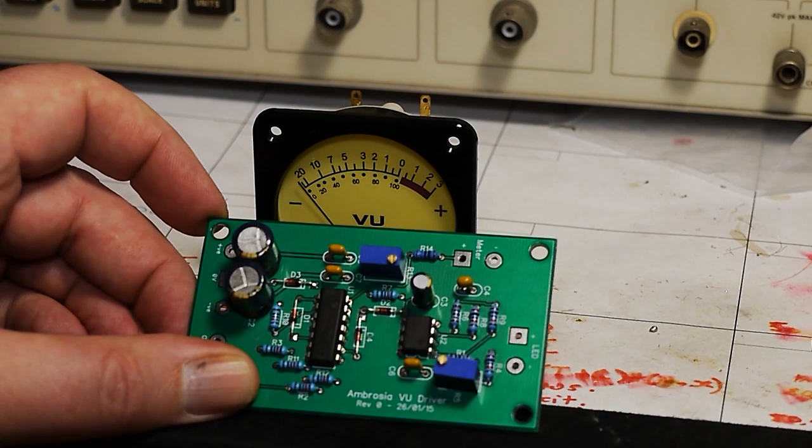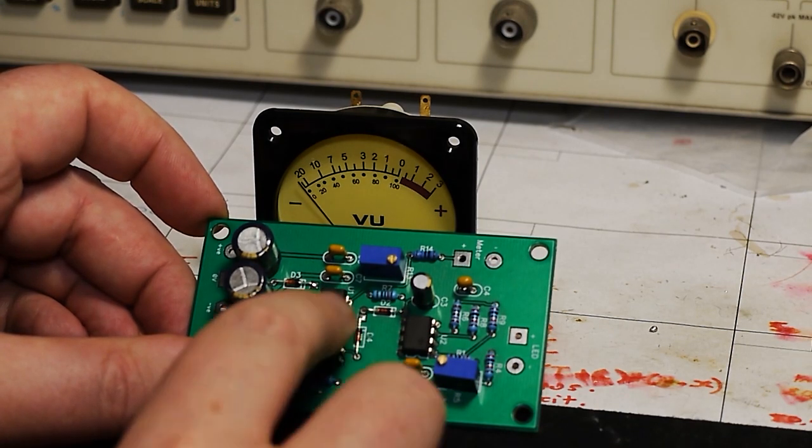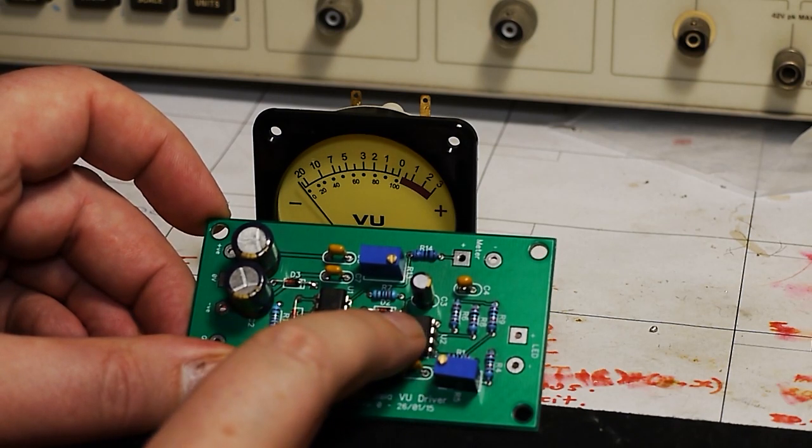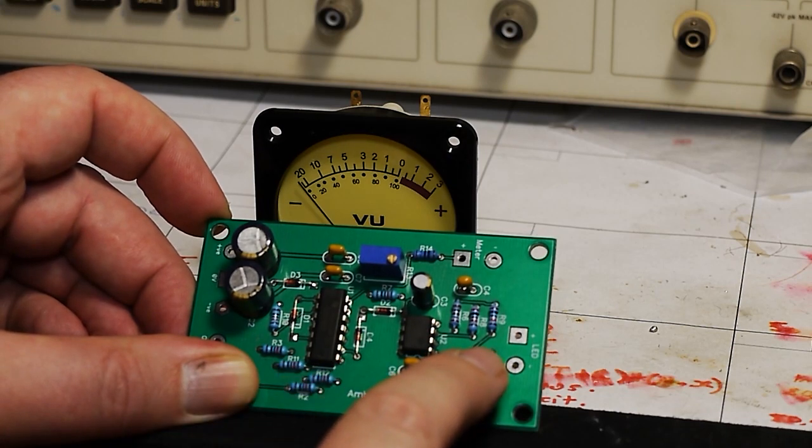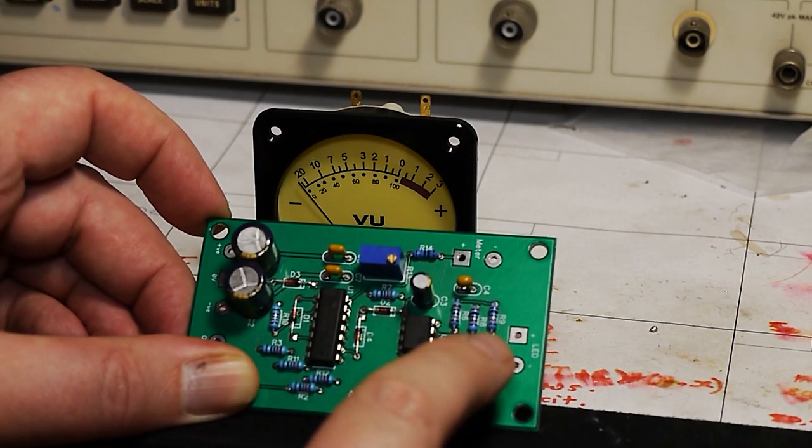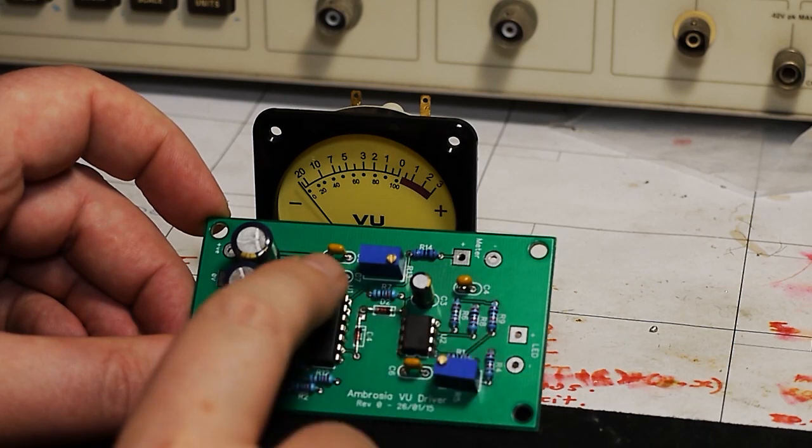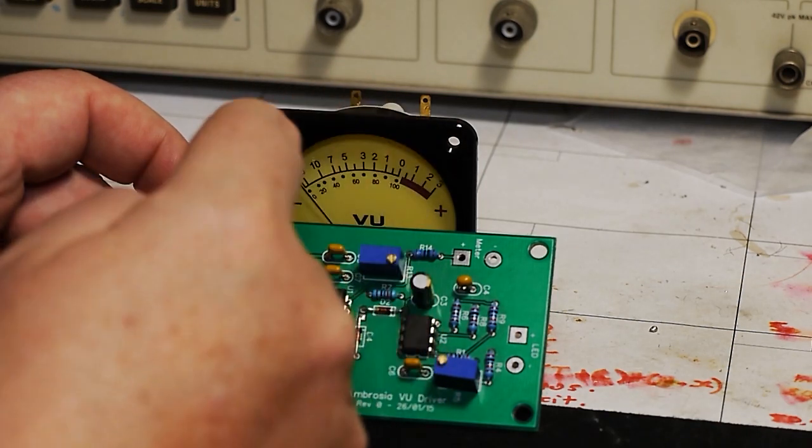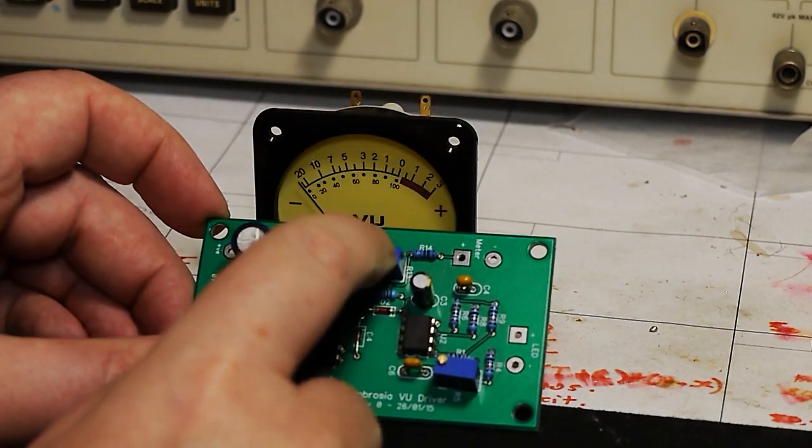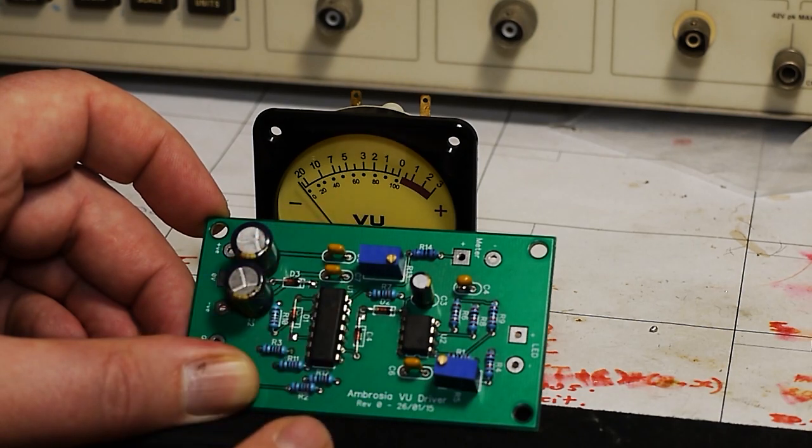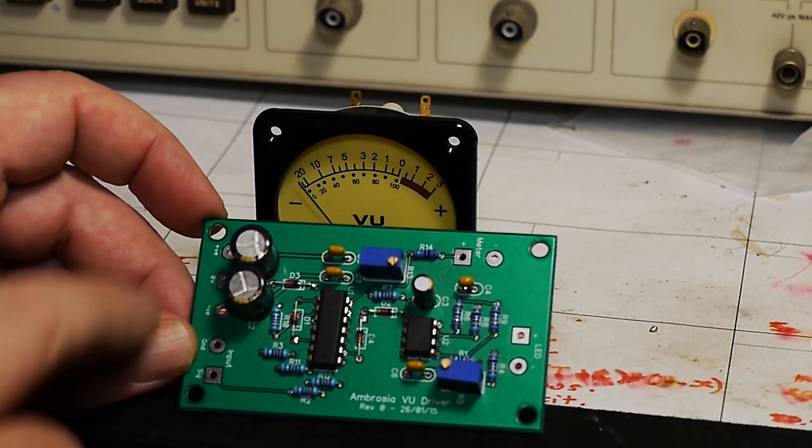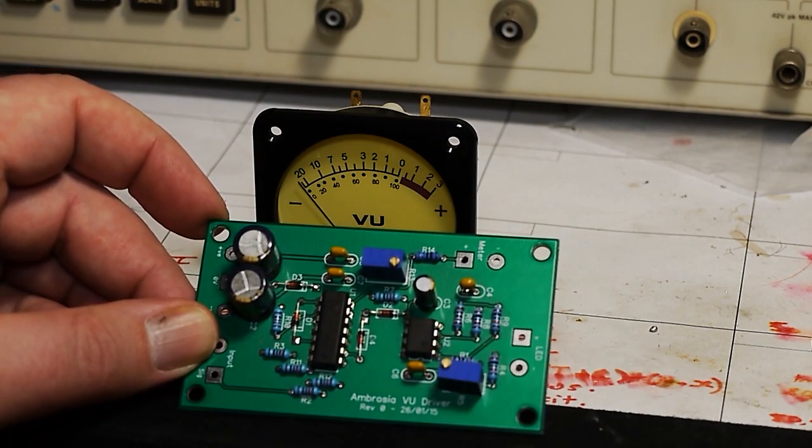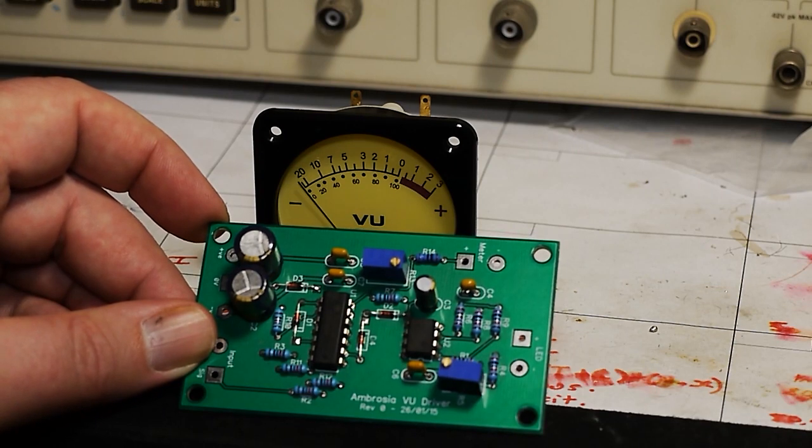That's a very brief run through of the VU meter driver board. So yeah, that's a TL074 quad op amp and the dual comparator that we used. That would be the trim pot for the threshold for the peak indicator, and that is the trim pot for adjusting the VU meter level. And that's basically it. So power supply under there, input to there, that drives the meter movement, and that drives the LEDs. Simple. Thanks for watching.